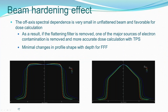The off-axis spectral dependence is very small in the unflattened beam — the spectrum is almost the same across the beam, which is favorable for dose calculation. Because there is no flattening filter, electron contamination is also removed, so the TPS can do more accurate calculations. Because of the spectral effect between central and off-axis in a flattened beam, the beam profile shape changes with depth. But for an unflattened Triple F beam, the shape remains the same at all depths — only the divergence causes the profile to be wider.